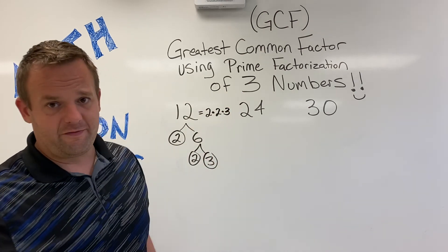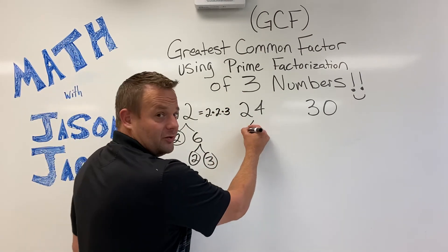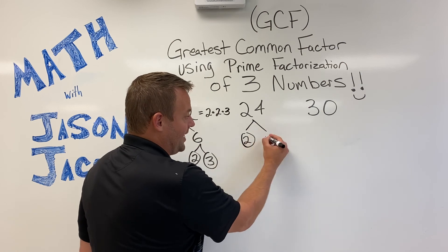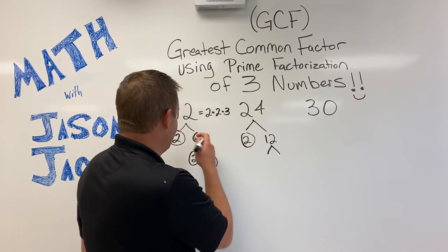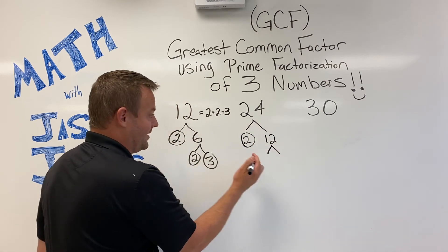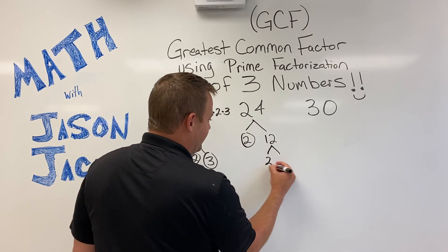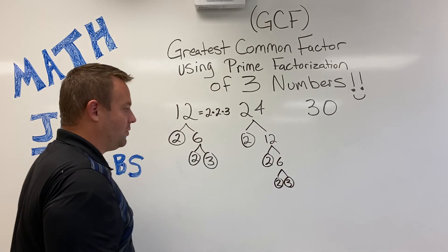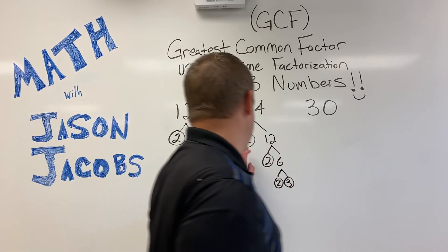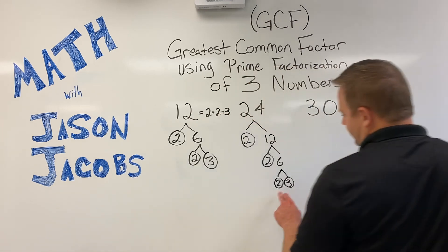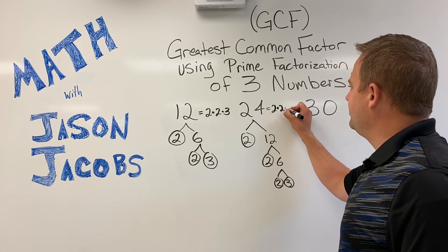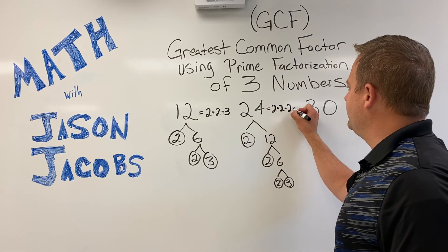Now let's do the prime factorization of 24. 24 factors out into two and 12. 12 factors out just like we did right here. So the prime factorization of 24 is two times two times two times three.